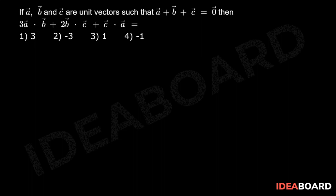Given a bar, b bar, c bar are unit vectors, therefore we have mod a bar equals mod b bar equals mod c bar equals 1. Also given a bar plus b bar plus c bar equals 0 bar. Consider this as equation number 1.